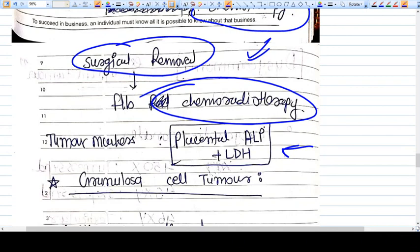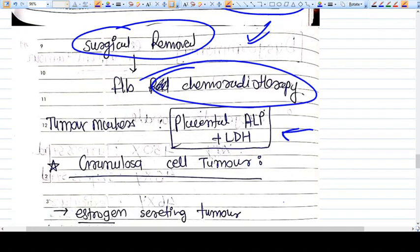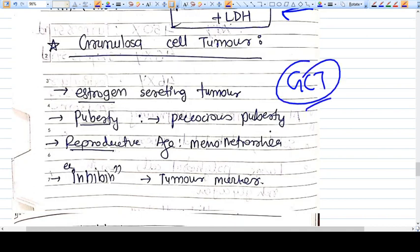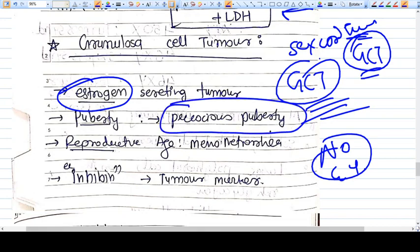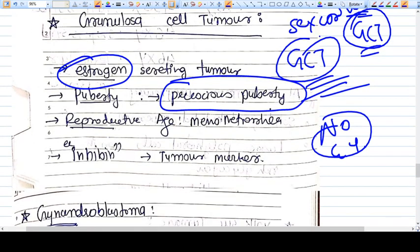Now comes granulosa cell tumor. It's not a germ cell tumor despite the abbreviation GCT. It's a sex cord tumor. It secretes estrogen, and because of high estrogen levels in the body, you'll find different effects: in prepuberty patients it causes precocious puberty, in reproductive age there's menstrual irregularity, and in postmenopausal patients you'll see postmenopausal bleeding. Inhibin is the marker.